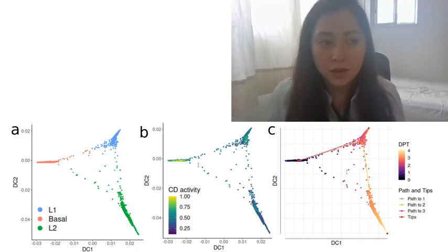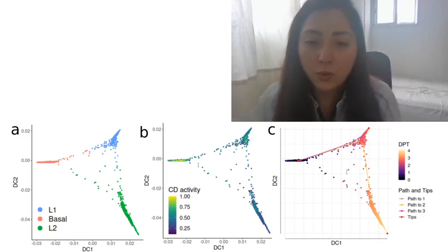And then I performed some pseudotime ordering which is Figure 2c where I selected the root as the cell with the highest cell differentiation activity. And then a trajectory was inferred to the terminal cells which are in L1 and L2.